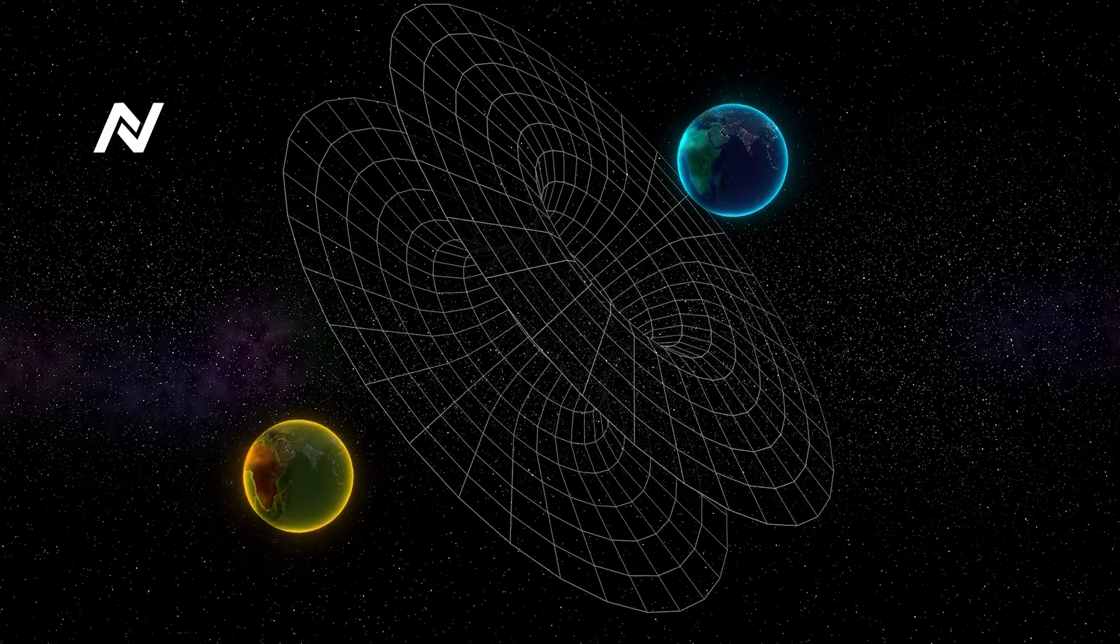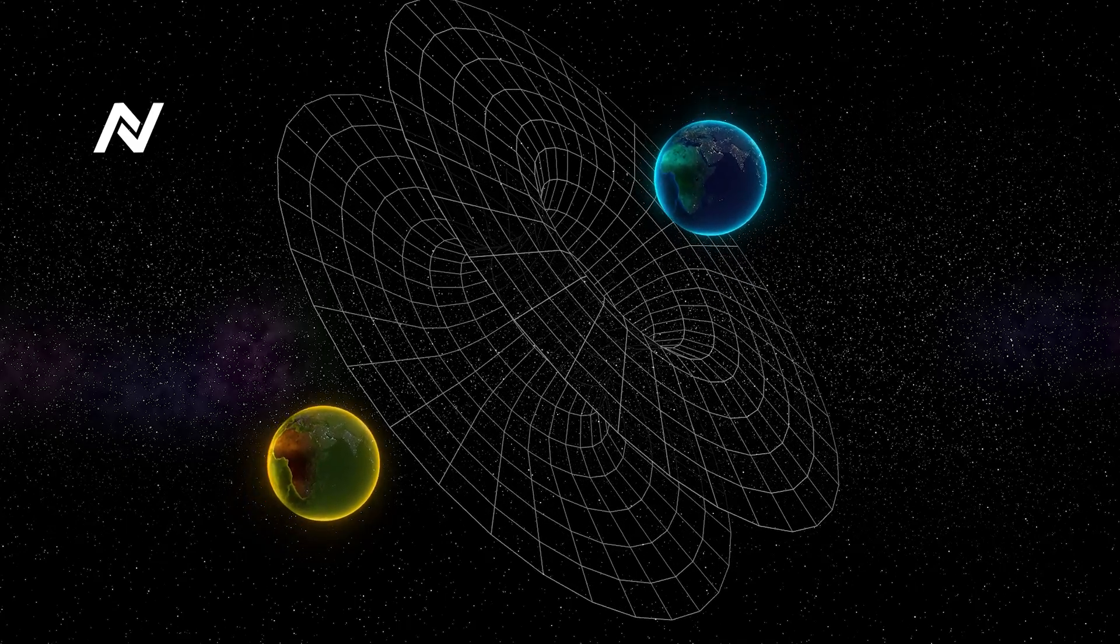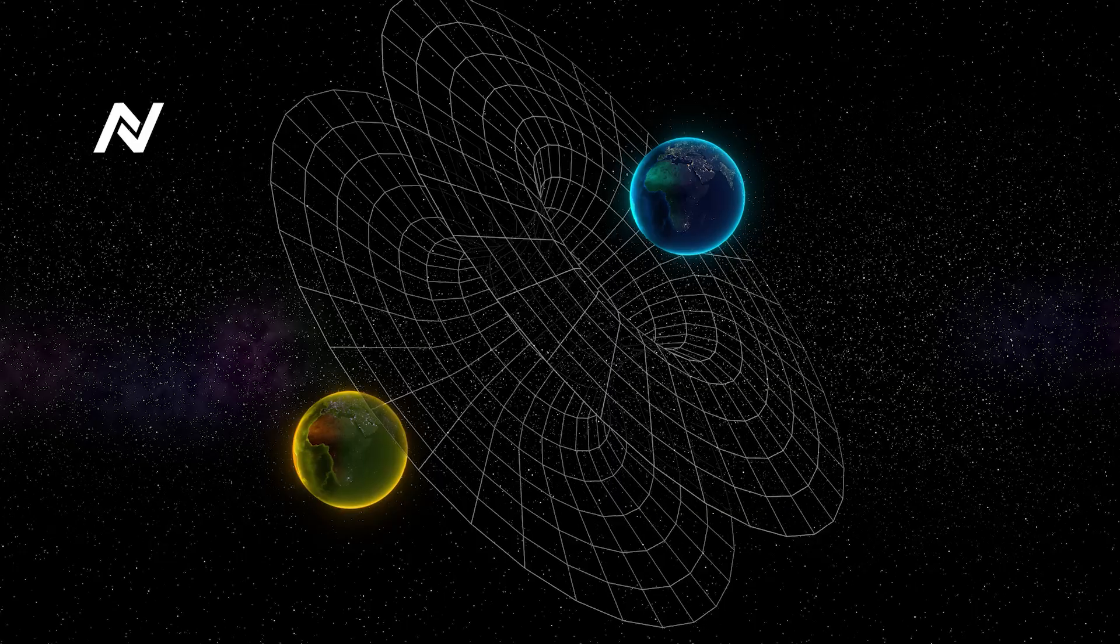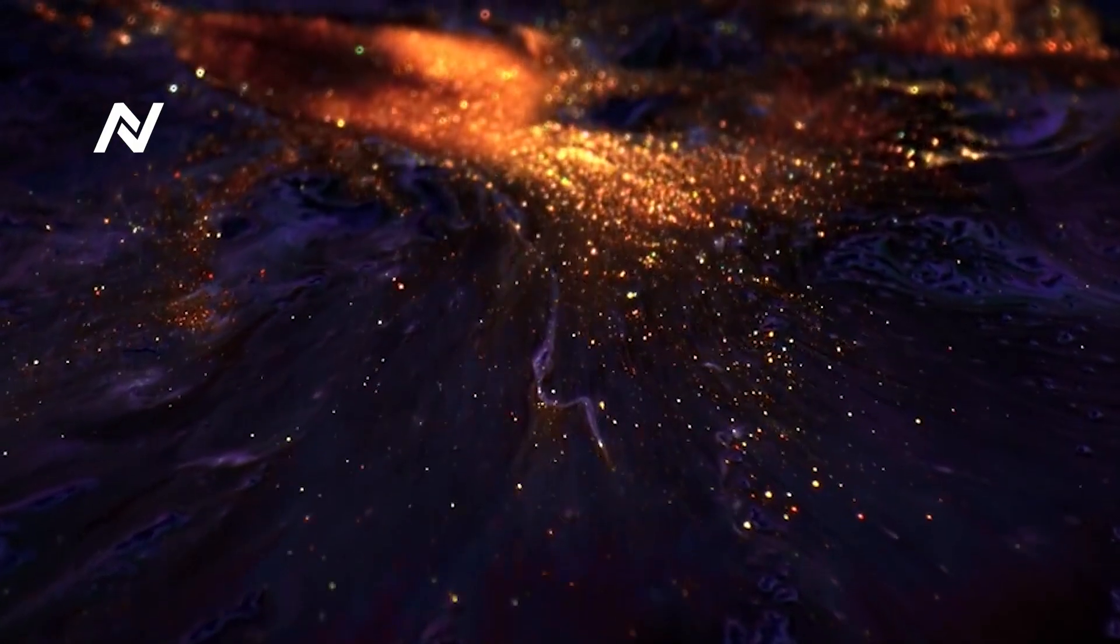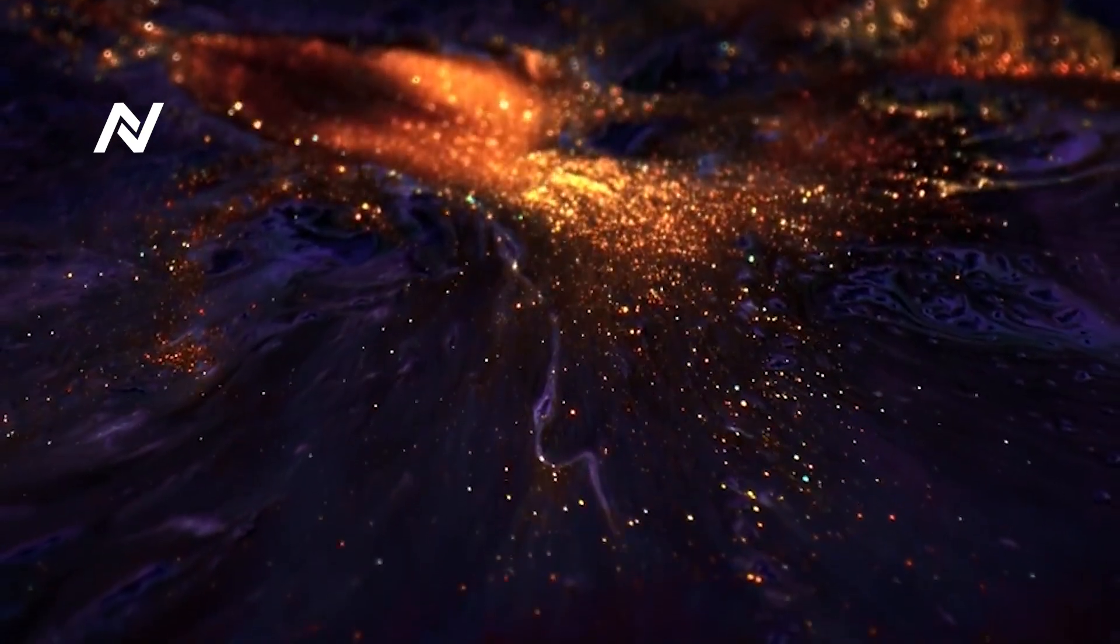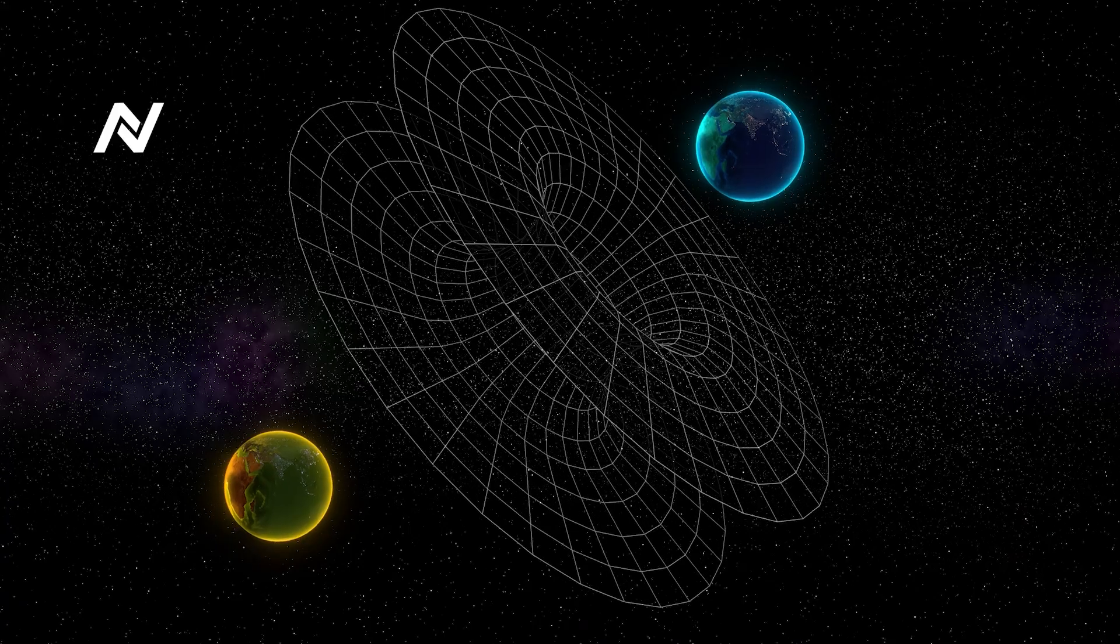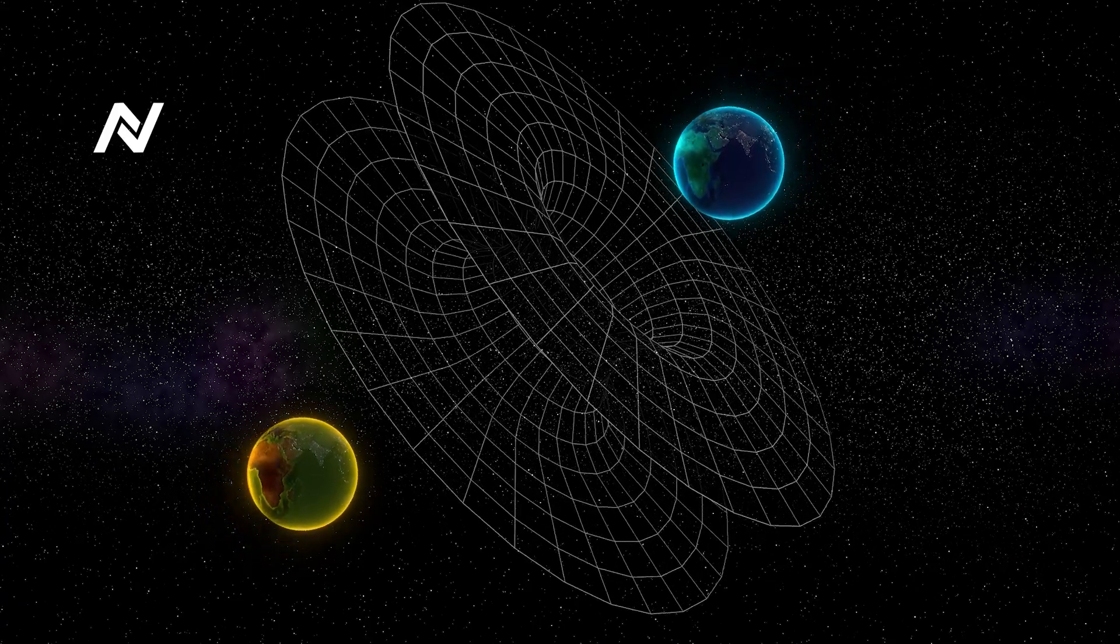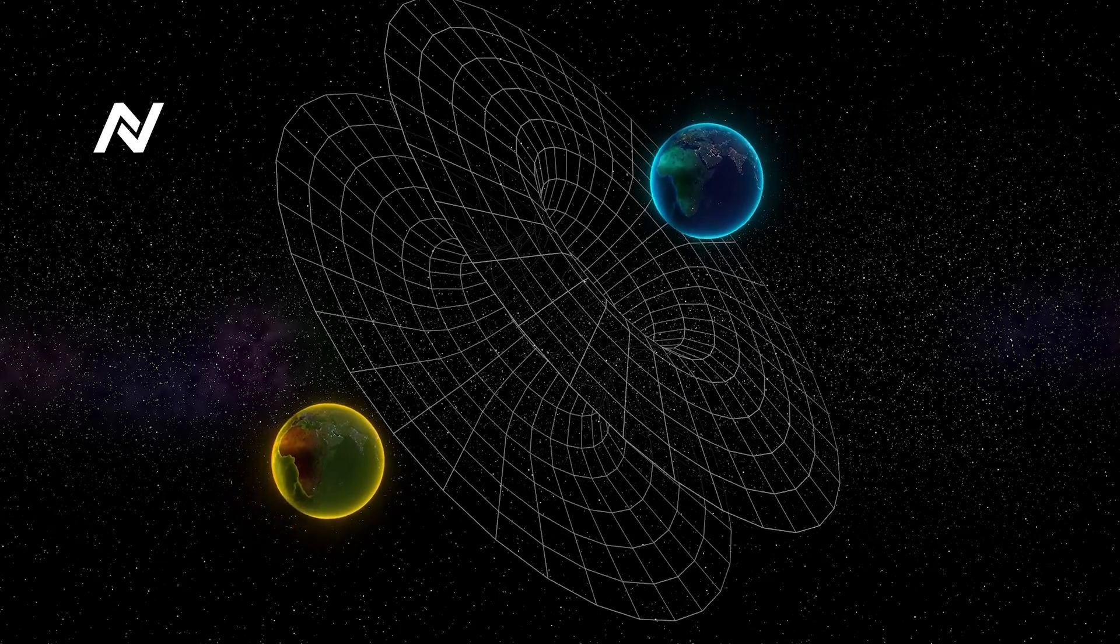But if we could see space-time, perhaps we would see slight distortions around every object we encounter. A person walking by might create a ripple in the fabric of space-time, just as a pebble creates ripples in a pond. Even the most ordinary movements, like lifting your hand or stepping forward, might reveal subtle warps in the surrounding space-time. The world around us, even in its smallest details, would become an intricate tapestry of cause and effect, with every action creating a ripple in the universe.